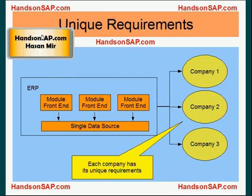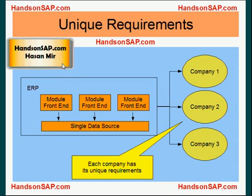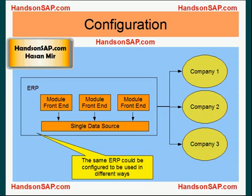The same ERP software could be implemented for different kinds of companies, and each company could have its own requirements. Companies are in different businesses and verticals — they have different sizes, different business processes, and different cultures. But the same ERP software could be implemented for any of these companies. Each company has its own unique requirement, and the same ERP could be configured to be used in different ways. That's where consultants come in — they understand your business requirement and do the configuration settings so that the ERP starts behaving in agreement with your business needs.